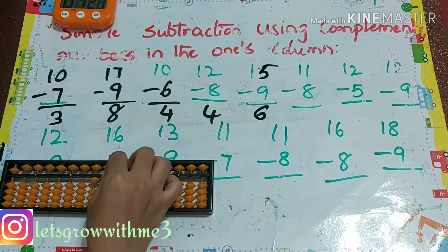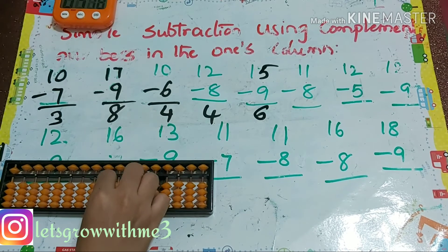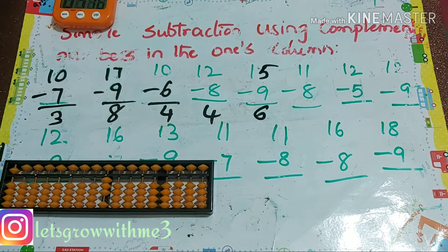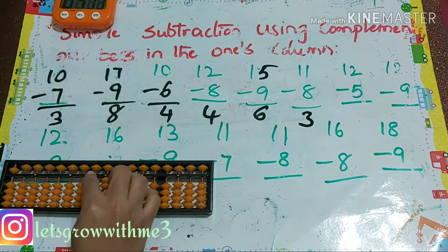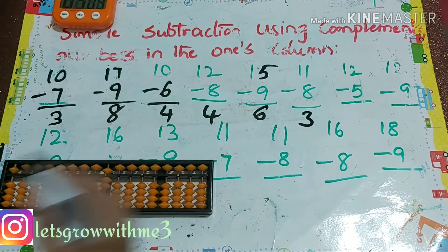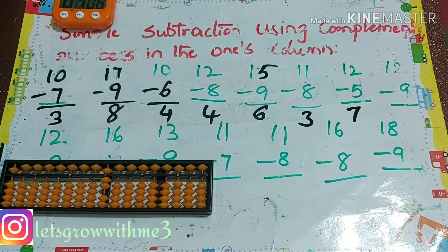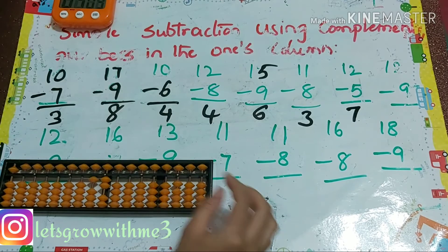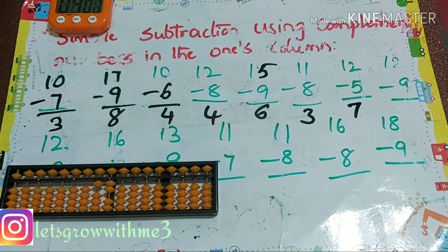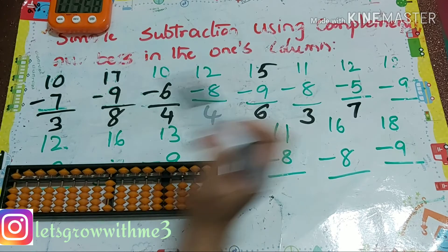Next one: 11 minus 8. How to do minus 8? Minus 10 plus 2. Our answer is 3. Next: 12 minus 5. How to do minus 5? Minus 10 plus 5. Answer is 7. Next again: 12 minus 9. How to do minus 9? Minus 10 plus 1. Our answer is 3.